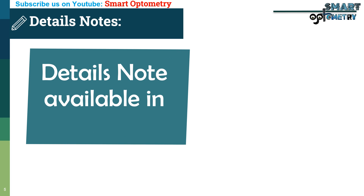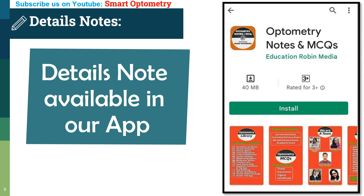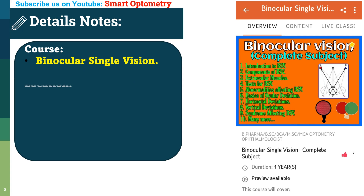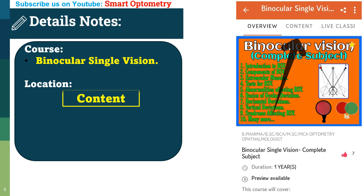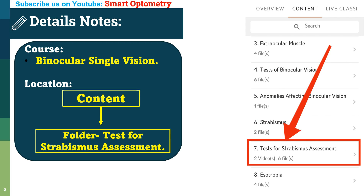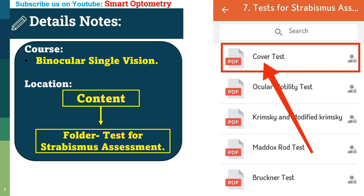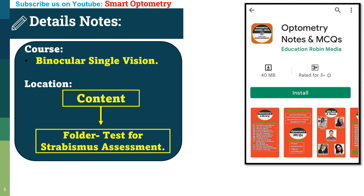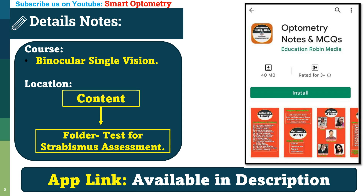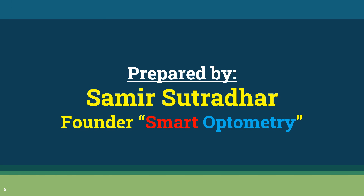Detailed notes about the direct cover test, cover-uncover test, alternate cover test, and prism bar cover test are available in our app, Optometry Notes and MCQ. Go to the content, then check the folder 'Tests for Strabismus Assessment' under Binocular Single Vision. The app link is available in the description. Stay with Smart Optometry and study optometry smartly.